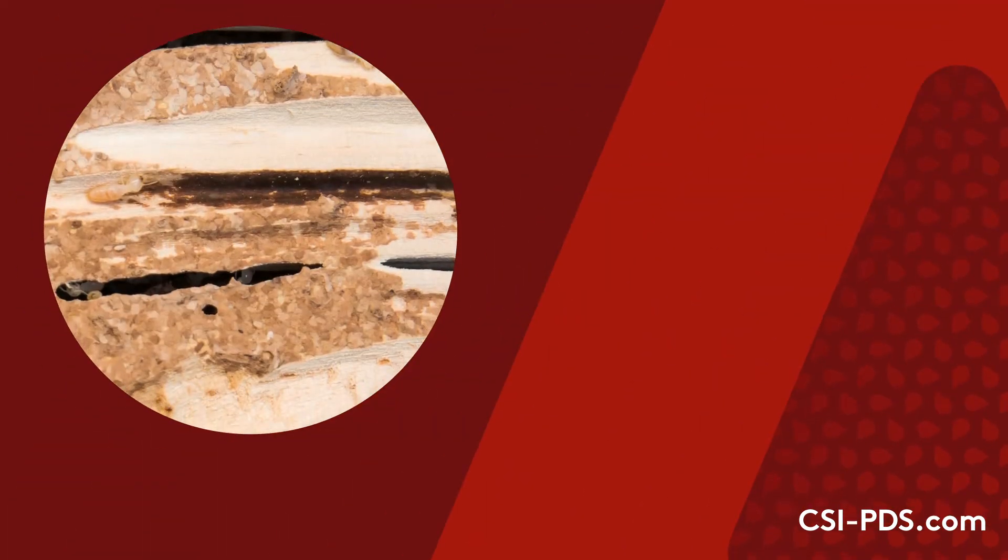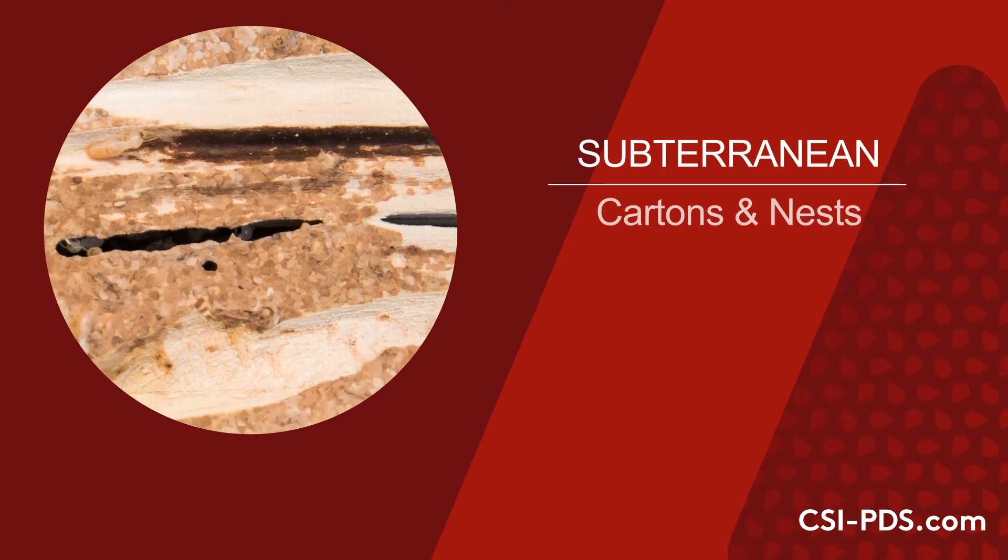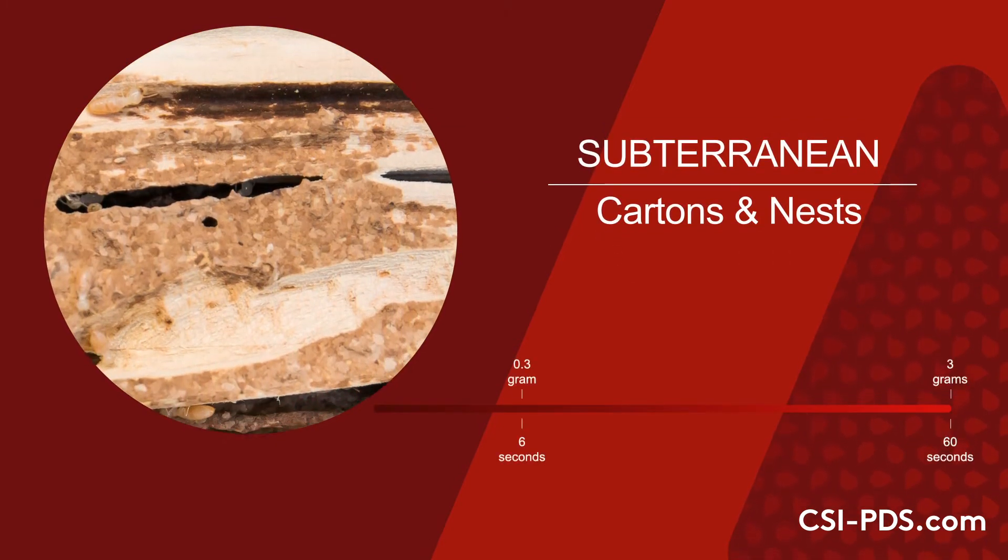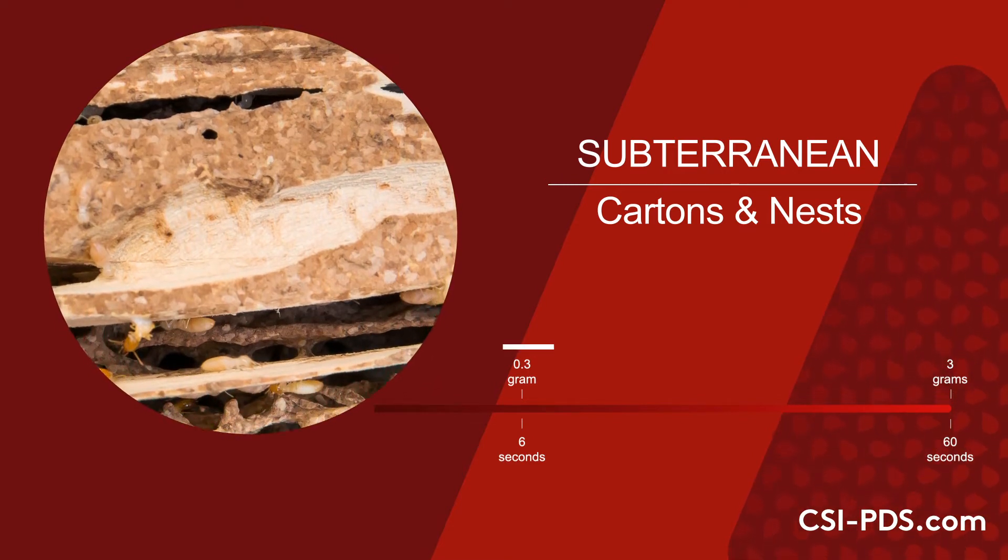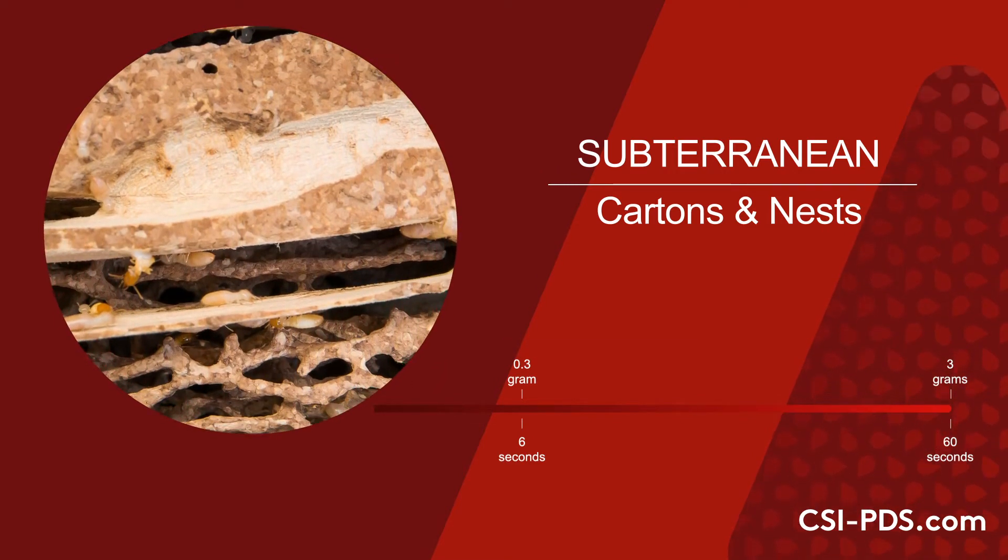Finally, to treat subterranean termite cartons and nests, make applications using the PDS for 6 to 60 seconds. This will apply 0.3 to a full 3 grams of Taurus Dry.